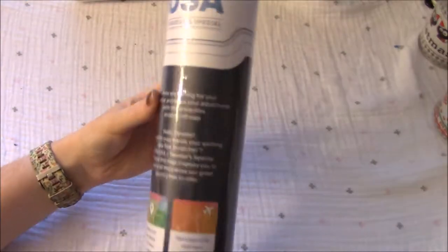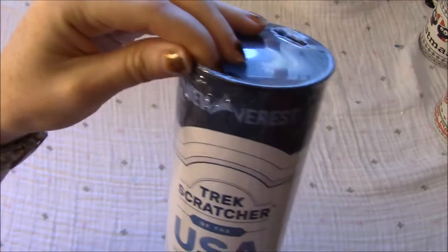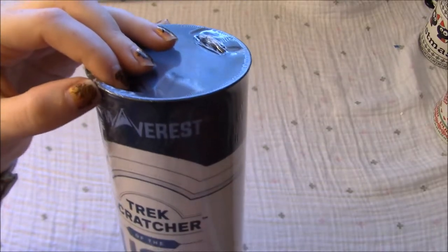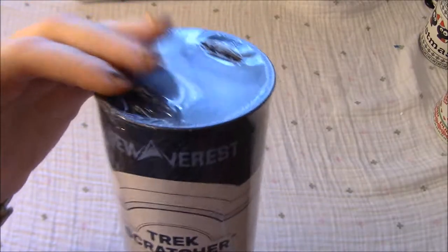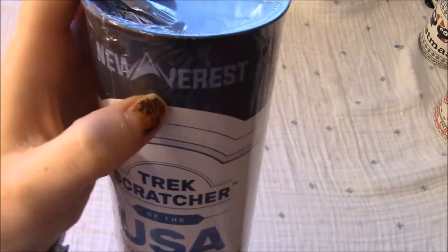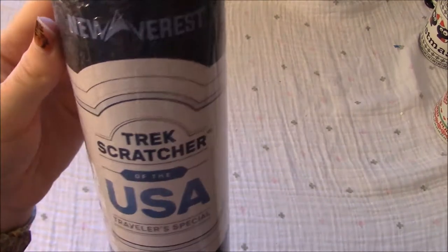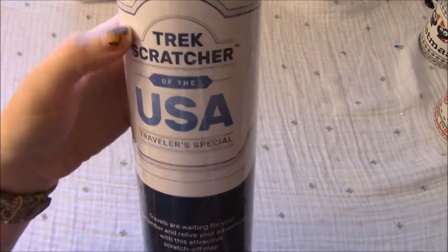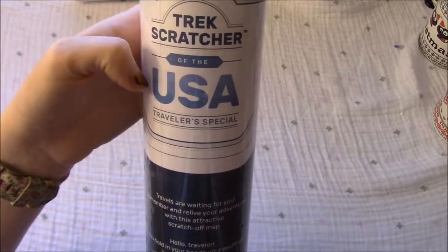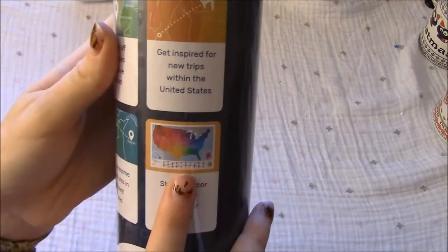Hey guys, so we are back today with another one of these scratch-off maps. This one is by Nuvrist. This is a trek scratcher of the USA, a traveler special. This one looks like it's rainbow, so that'll be pretty fun.